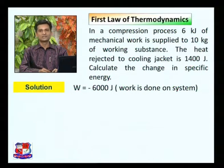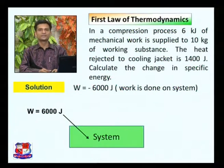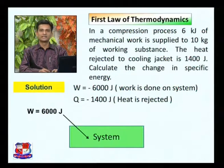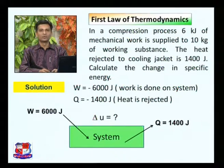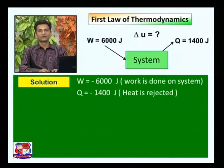Work done on the system can be represented as W = 6000 J to the system. Q is negative since heat is rejected to the cooling jacket, so Q equals -1400 J. Representing this on the system diagram: 6000 J of work is done on the system and 1400 J of heat is rejected to the cooling jacket. We need to find the change in internal energy.